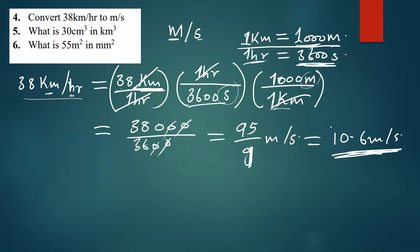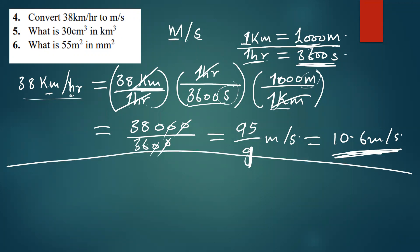That is how you do the conversion. We move on to the next one, which is converting 30 cubic centimeters to cubic kilometers.